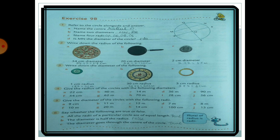Question 6: Say whether the following are true or false. All the radii of a circle are equal in length — True. The diameter is half the radius — False, it is double the radius. The diameter goes through the center of the circle — True. Also note: the plural form of radius is 'radii'.